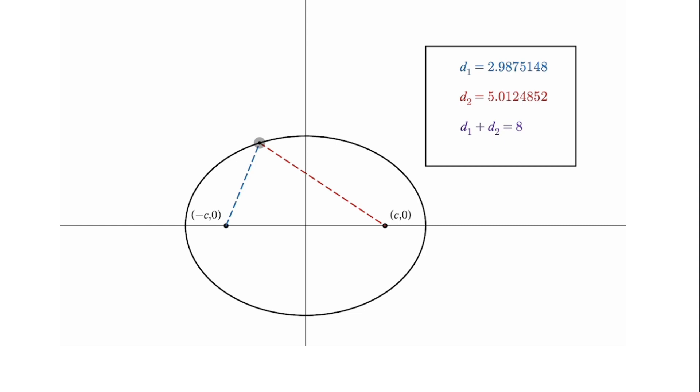So what we have pictured here is an ellipse with a point that has distances drawn to two fixed points which we call foci.